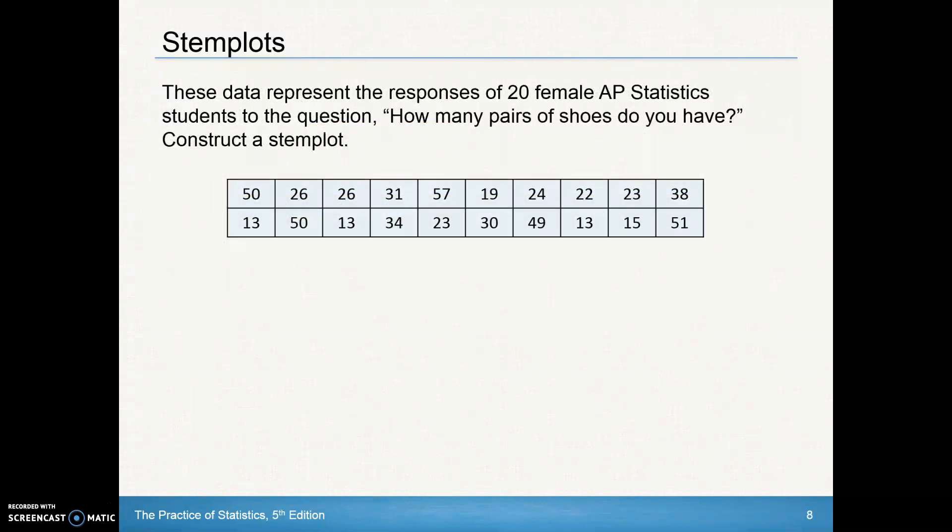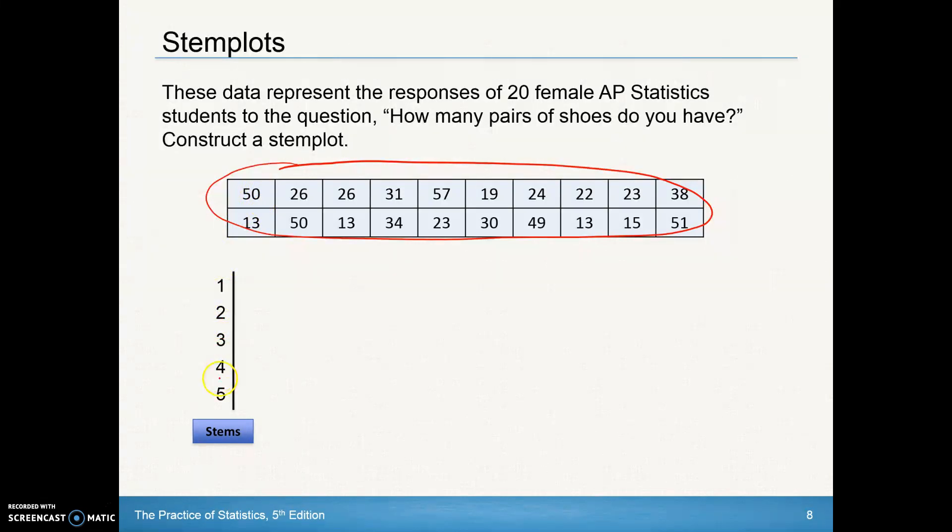So the data below are the responses of 20 female AP STAT students that answer the question, how many pairs of shoes do you have? Now I know some of this data is kind of ridiculous, but we're just going to use it anyway. So we're going to construct the stem plot of this data. What I looked at here first is I looked at the stems. It looks like all of these numbers in here, our lowest ones are kind of in the teens, highest ones are kind of 50. So I look at these as maybe like the teens, the 20s, the 30s, the 40s, and the 50s.